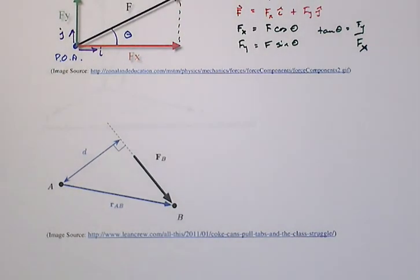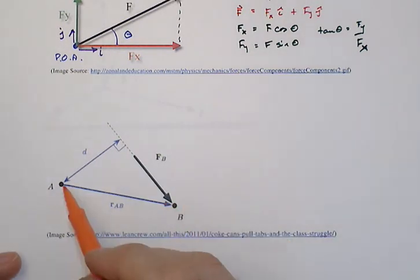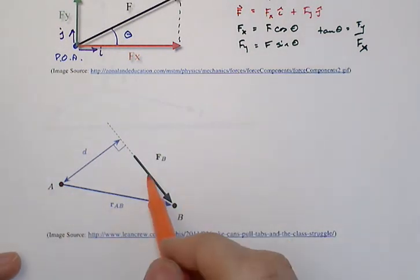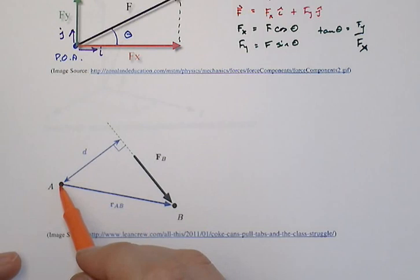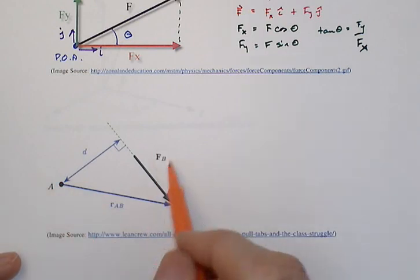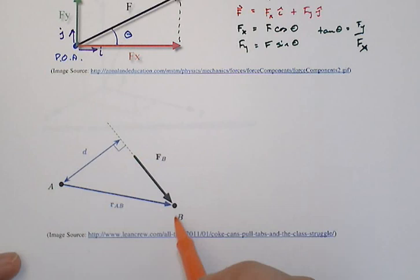Now, for moments, moments are nothing but the effect of a force in terms of spinning something, spinning an object relative to a point. So here we have a force called f sub e that's passing through point b, but note that we're going to look at a moment of that force associated with point a, a different point.